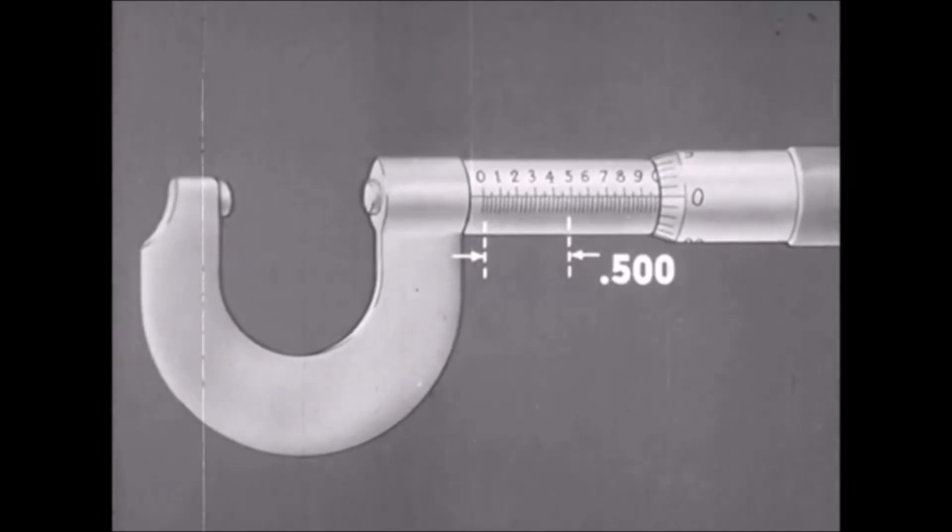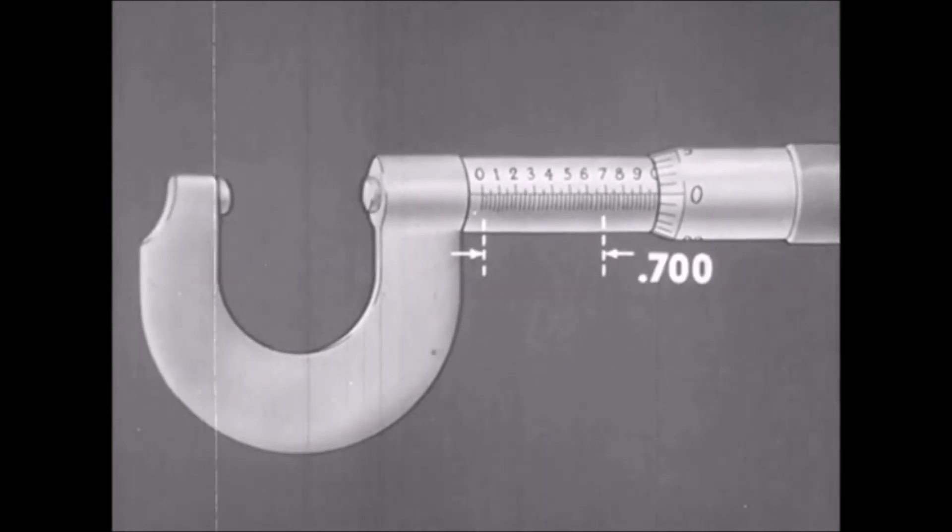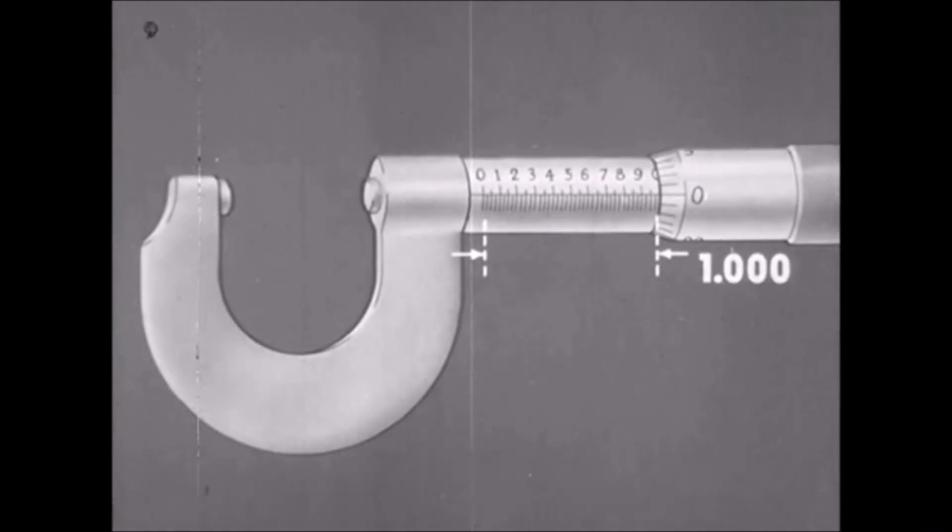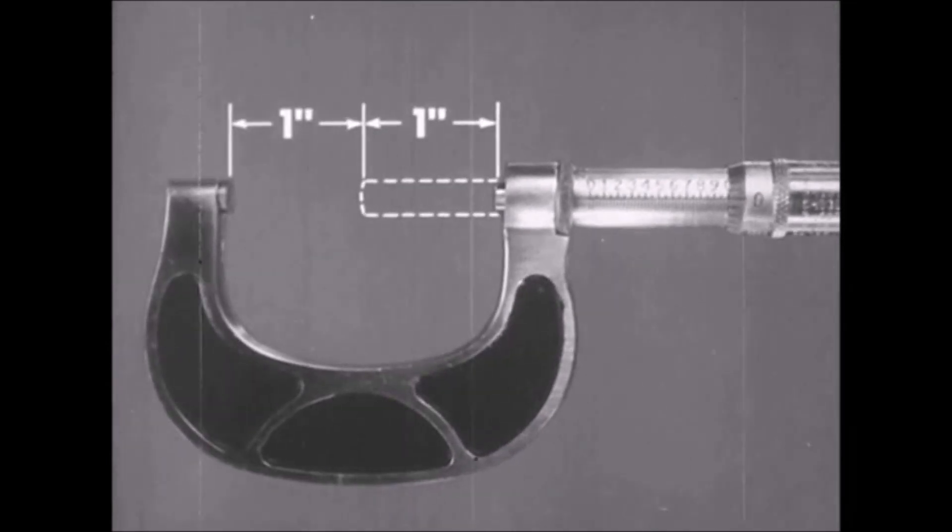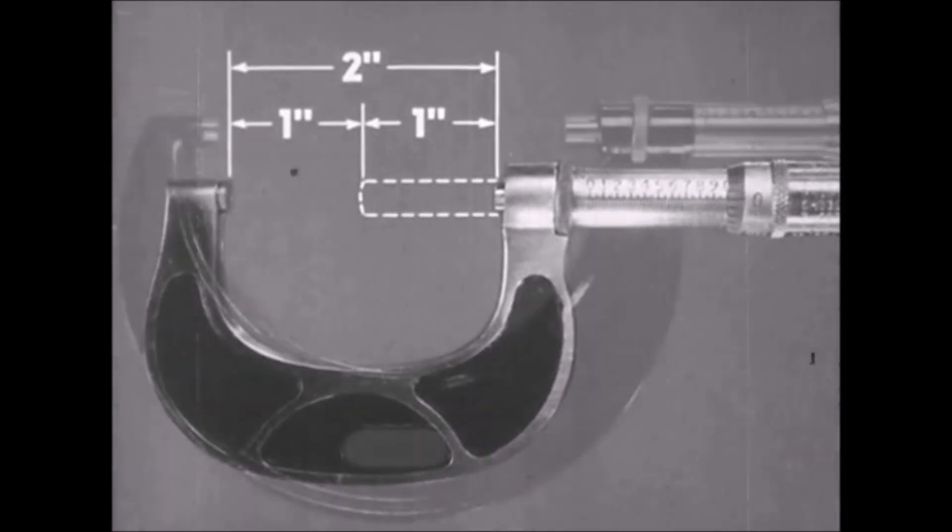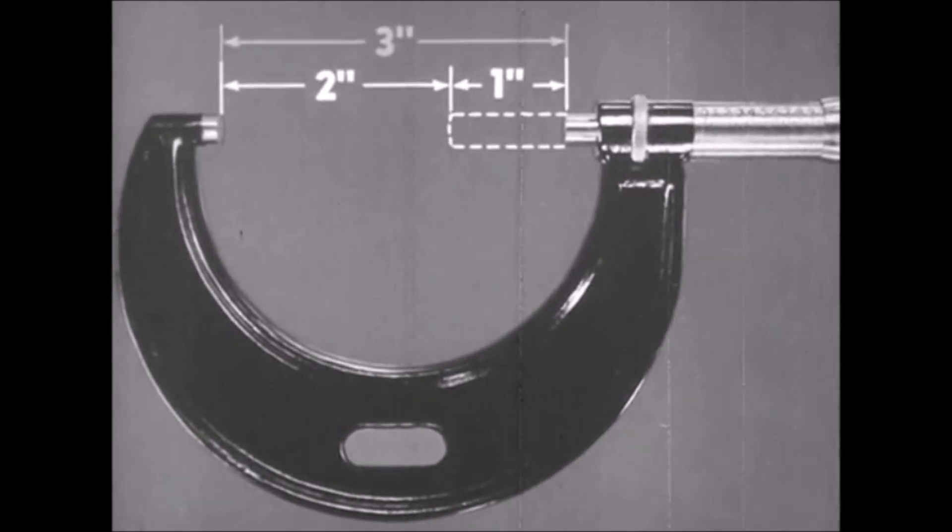The complete scale on this micrometer shows that it has a range of ten times one hundred thousandths or one thousand thousandths or one inch. Micrometers come in standard sizes designated by the largest opening of the micrometer and in steps of one inch. Most sizes, however, measure only one inch in thousandths. The one inch micrometer measures from zero to one inch in thousandths, the two inch from one to two in thousandths, and the three inch from two to three in thousandths, and so on.